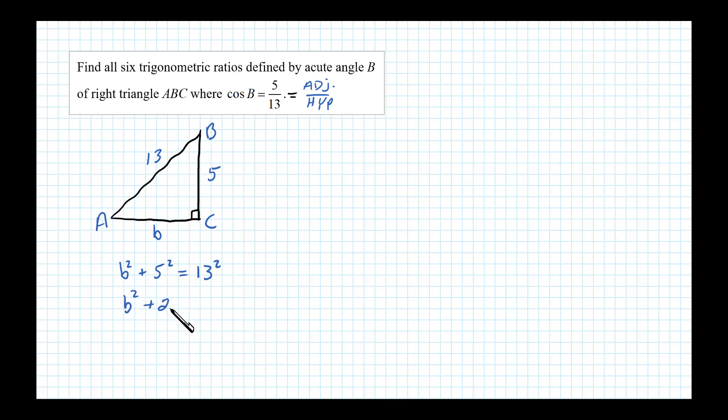Subtracting 25, we have b squared equals 144. So b equals plus or minus the square root of 144, which is plus or minus 12 units. Since this is a geometry problem, we'll choose b to be equal to positive 12.